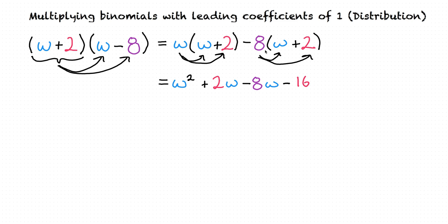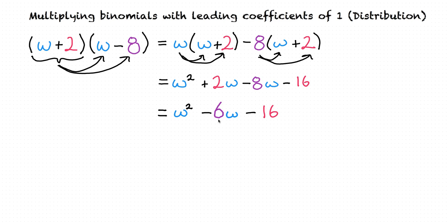Finally, we can simplify this a little bit more by combining these middle two terms. And our final answer is w squared minus six w minus sixteen.